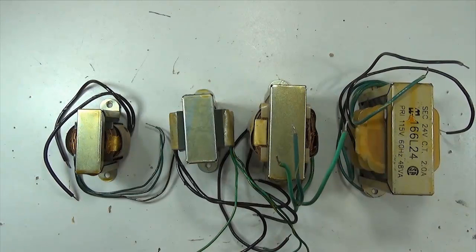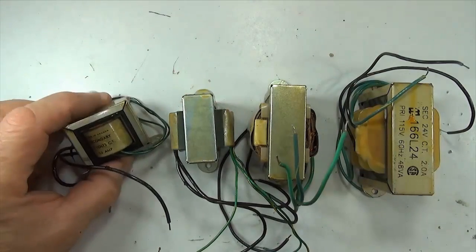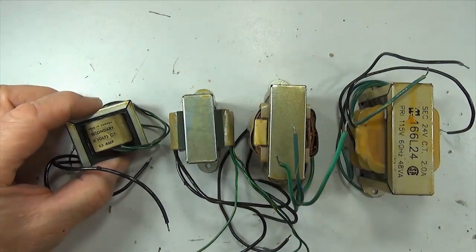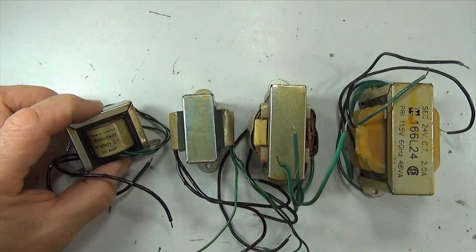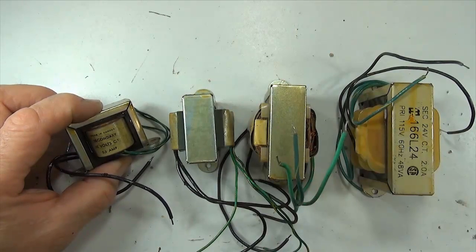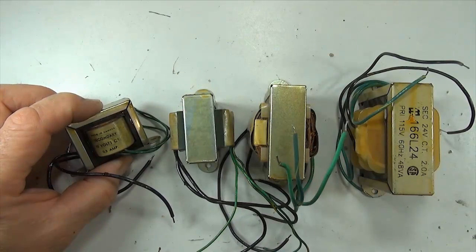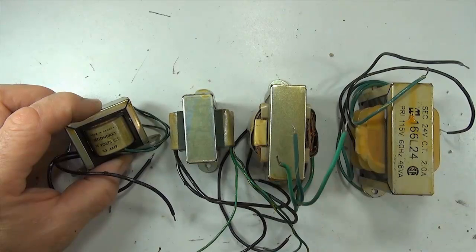All of these transformers will do exactly the same thing. As the transformer gets bigger, the output current gets larger. For this small transformer, it has a 25 volt center tap winding, and it can only deliver up to 0.3 amps.